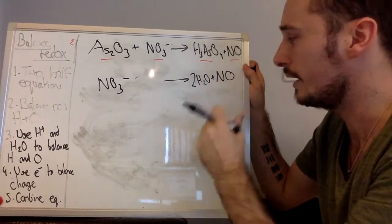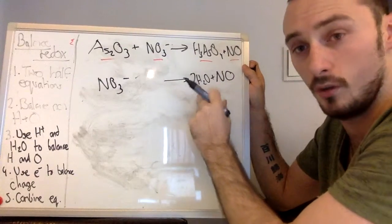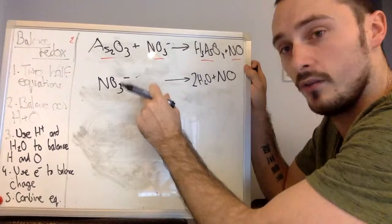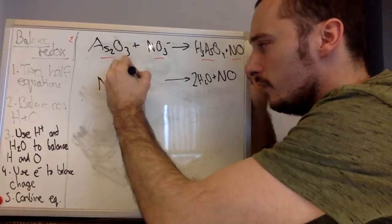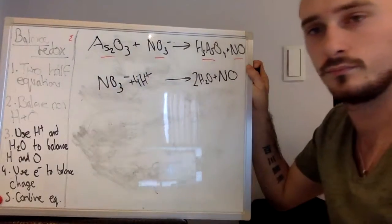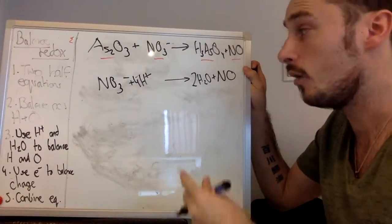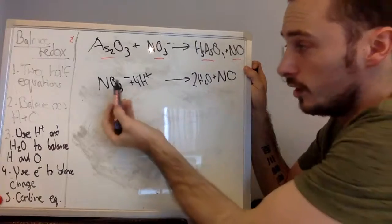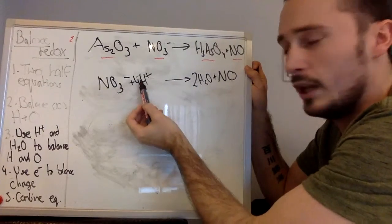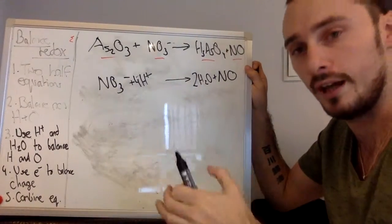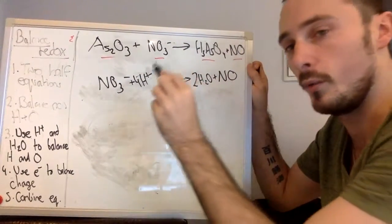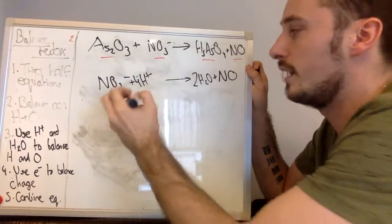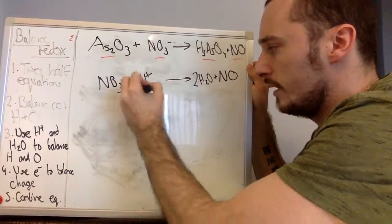However, because we have now four H on this side, we need four H on this side. It's happening in acidic media, so we can add four H plus. Only problem is now we have an imbalance of charge. So we have NO3 minus, four H plus, this means overall three H plus on this side, and zero on this side. So we need to add electrons on this side, and that is what we're going to do. 3 E minus.